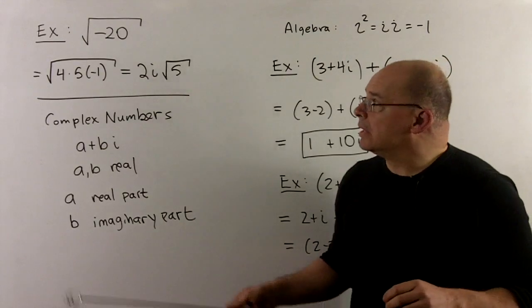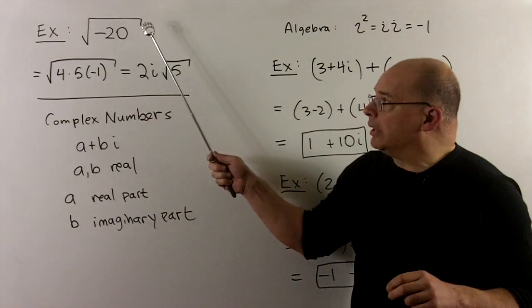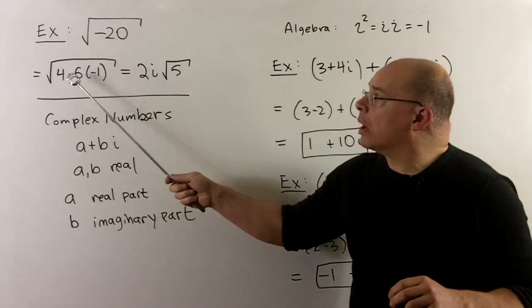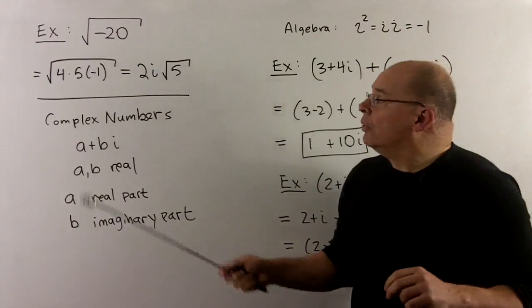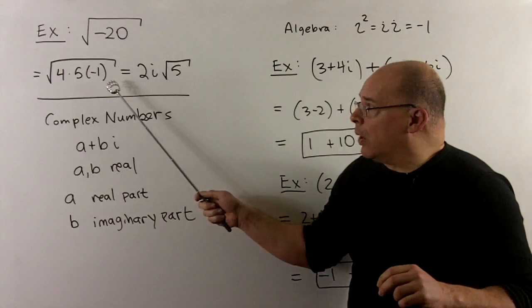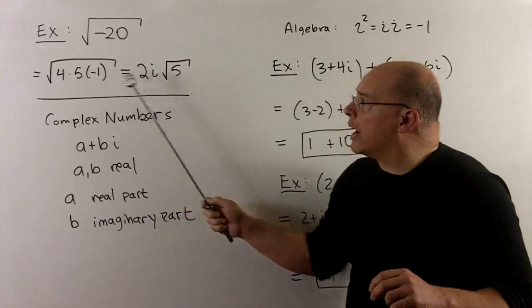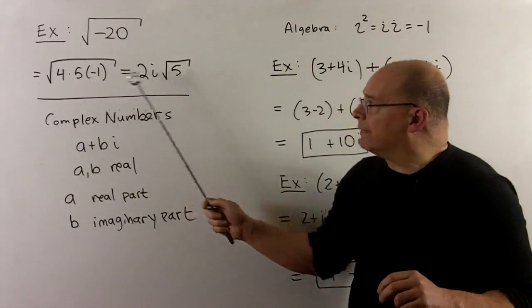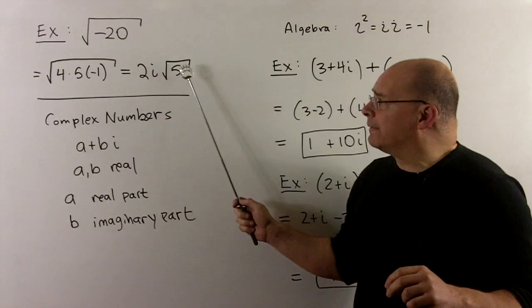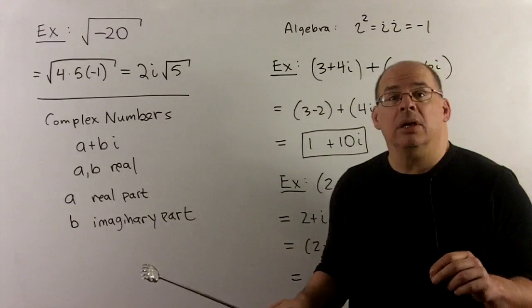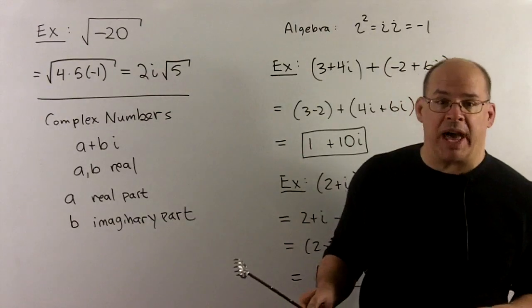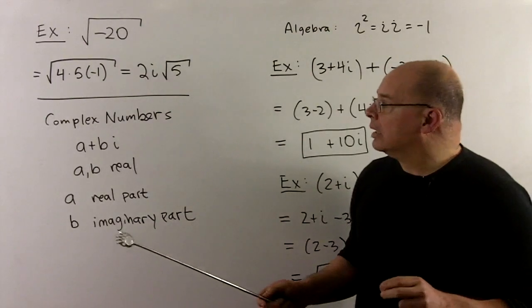For a final example, let's consider the square root of minus 20. Here, we'll pull out the biggest square. So, that's going to be a 4. We get 4 times 5 times minus 1. So, we can pull the 4 out as a 2. Square root of minus 1 goes to i. And then, we're left with the square root of 5. So, we get a 2i square root of 5. Of course, we should check this. But, we'll leave that as an exercise.